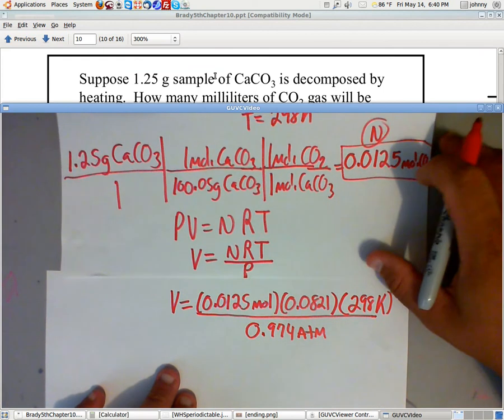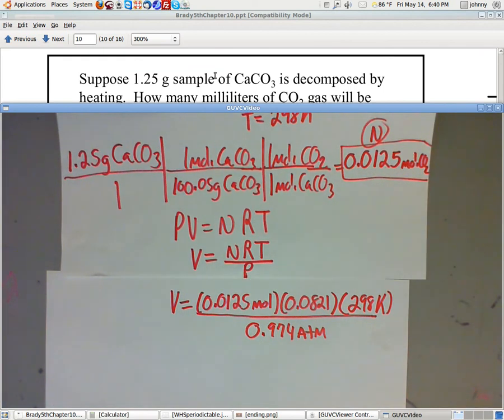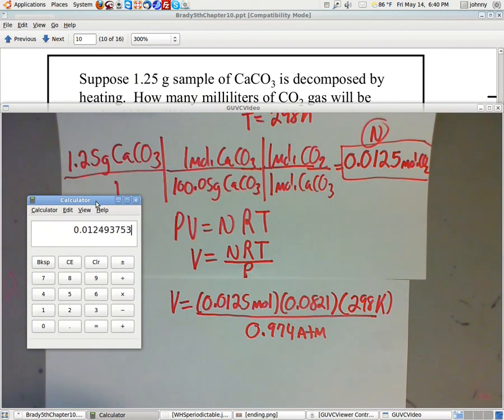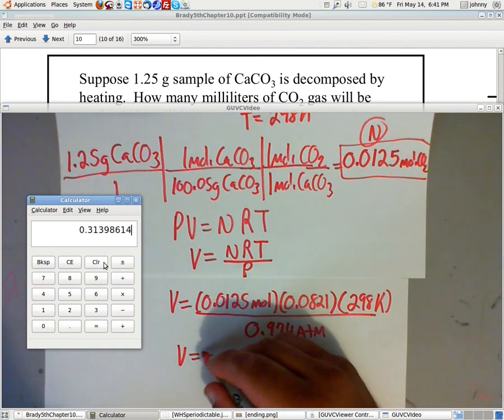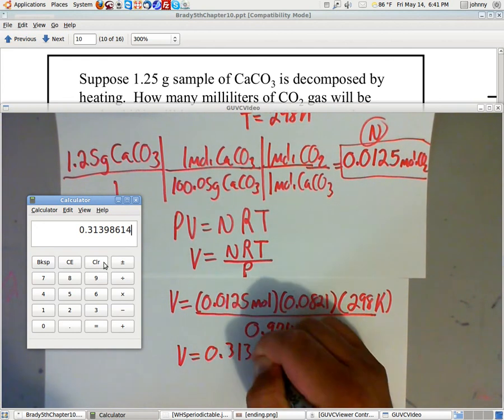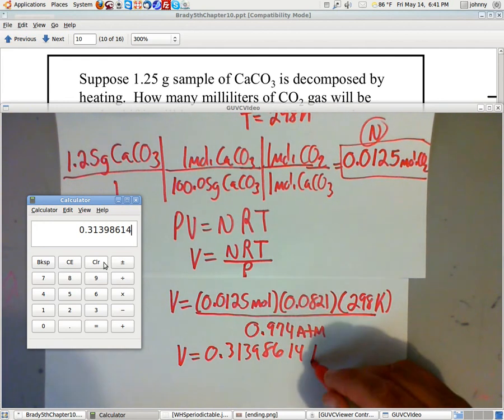Let me move the calculator out of your way so you can see it better. Okay, that's what you should see so far. Now I wanna enter that in on the calculator. That'll be 0.0125 times 0.0821 times 298 divided by 0.974. And that gives me that number. So my volume is equal to 0.31398614. Now remember that's liters.